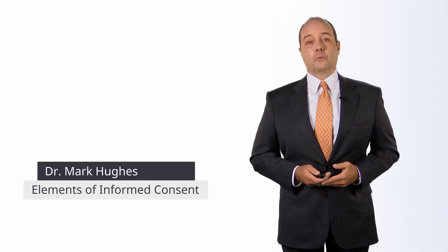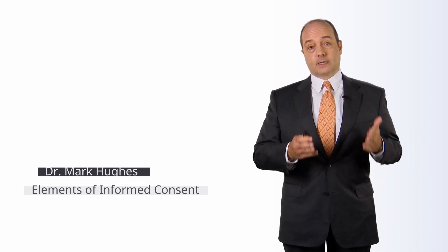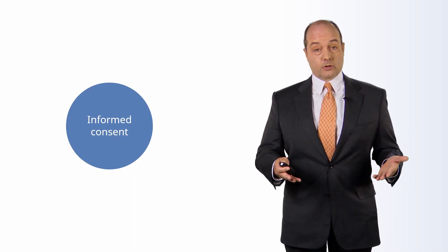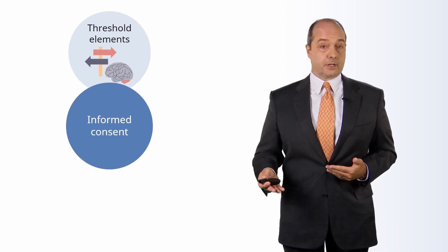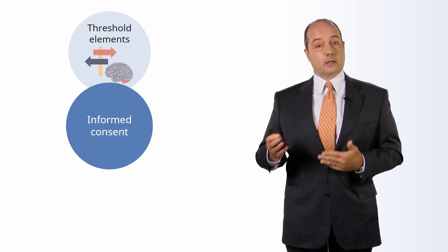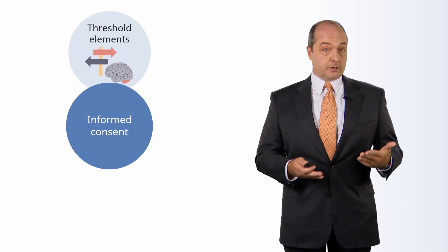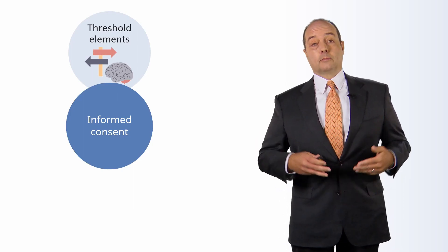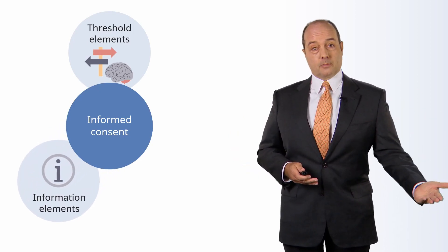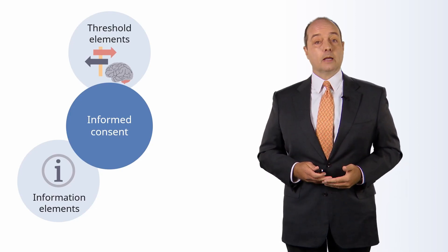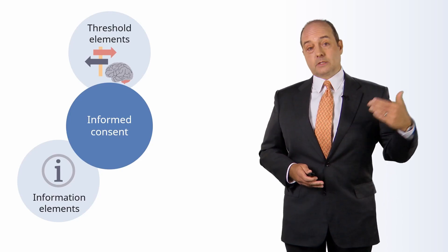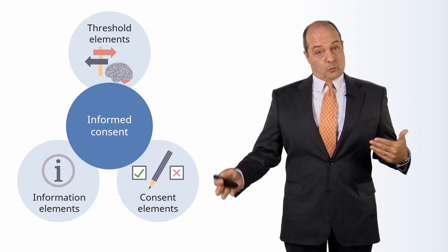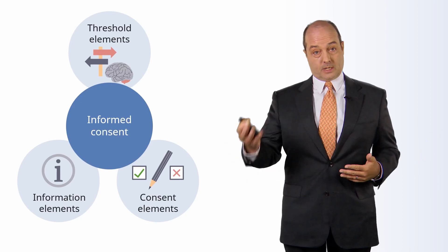So what are the elements of informed consent? First, there are preconditions. Even before you get to the consent process, you have to establish whether the patient is making decisions voluntarily and that they have the capacity or ability to make decisions. We then have information elements — disclosing information to the patient about the recommended treatment and checking that they've understood it. And lastly, there are consent elements: when we've given the information, we see if they make a decision — whether they say yes and consent, or say no and refuse.